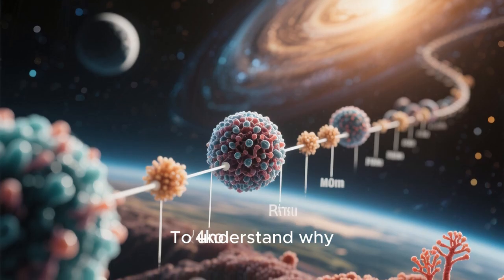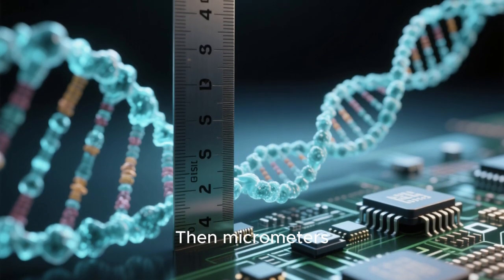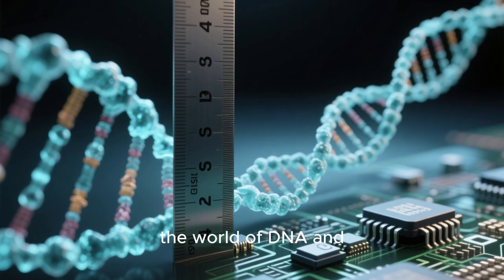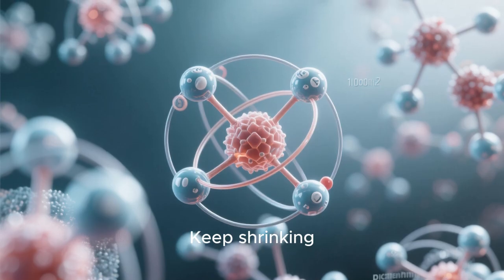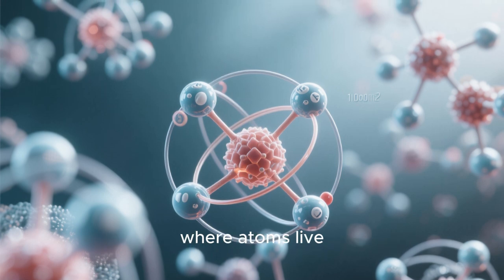To understand why, we need to rewind the scale of existence. Start with meters, then micrometers, then nanometers, the world of DNA and transistors. Keep shrinking. 10 to the minus 12. Picometers, where atoms live.